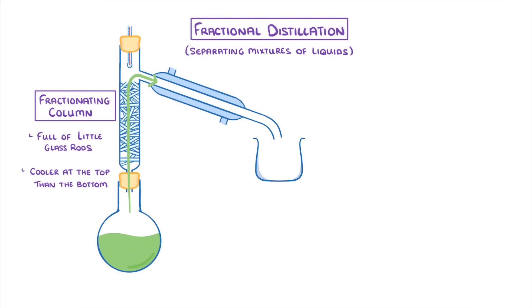To understand why this is important, let's imagine that we were trying to separate those three liquids that we mentioned before: methanol, ethanol, and propanol, which all have similar boiling points, although you don't need to remember them. And before we continue, just be aware that in real life, these would all be colourless, not green. We're just showing them as green to make it easier to follow along.